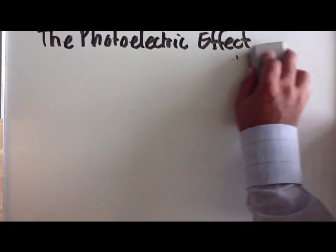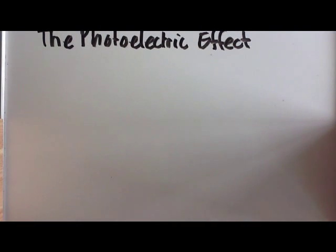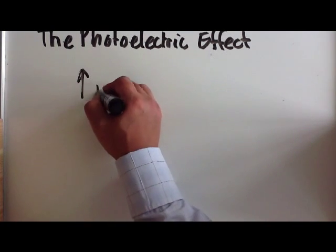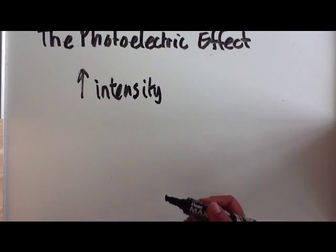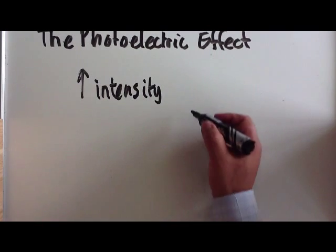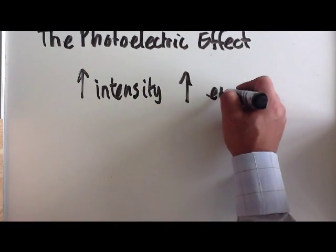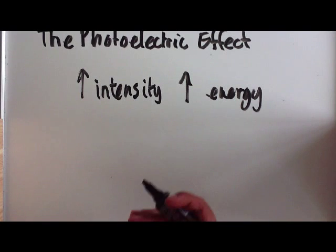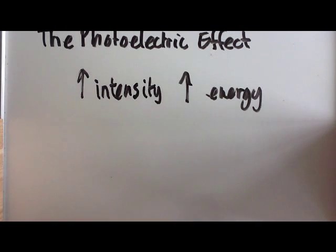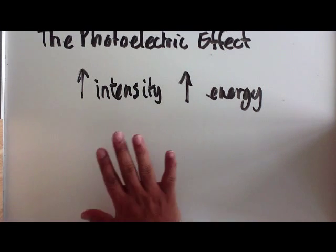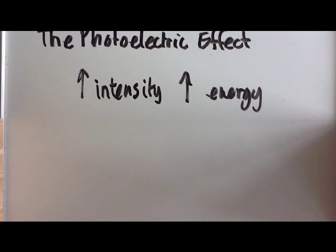The wave theory, however, is slightly different. For the wave theory, we know that if you increase intensity, if light was therefore a wave, what that means is that we are increasing the energy as well. Because greater intensity means greater energy. So according to the wave theory, increasing intensity should increase the energy and therefore should increase the kinetic energy that the electrons leave with.